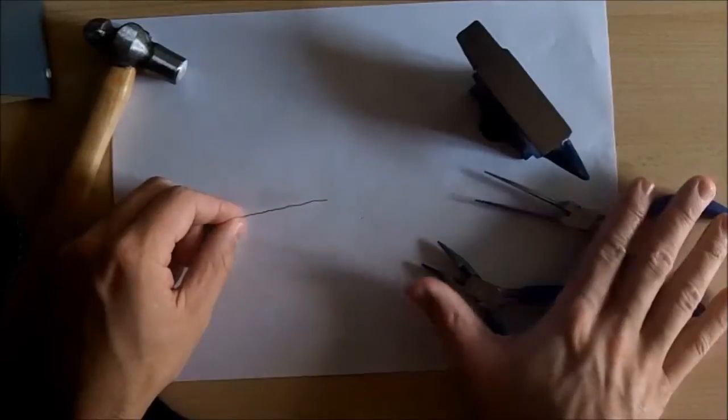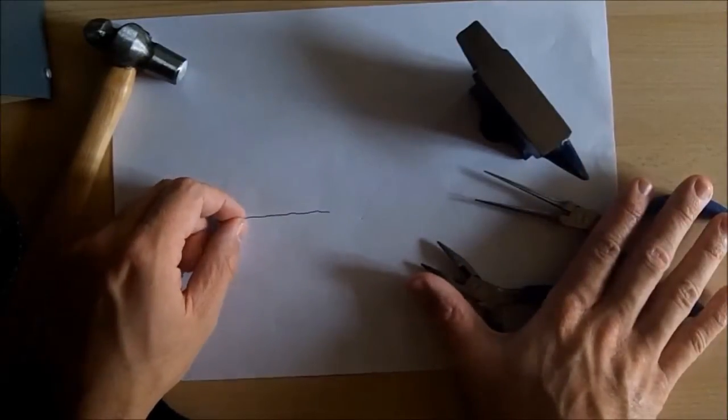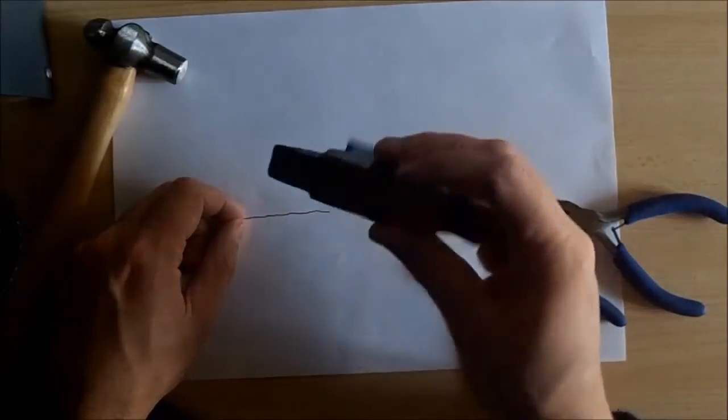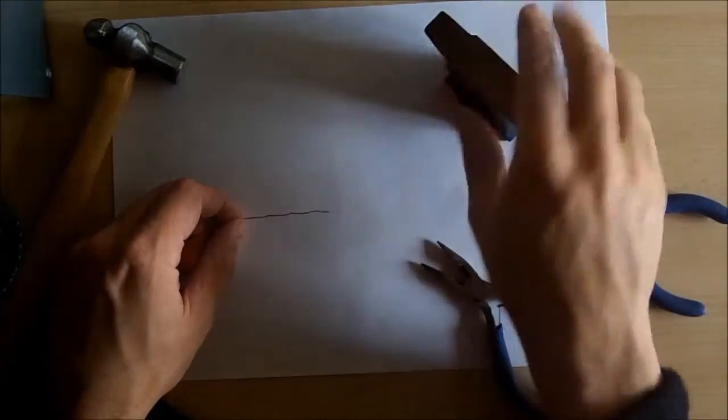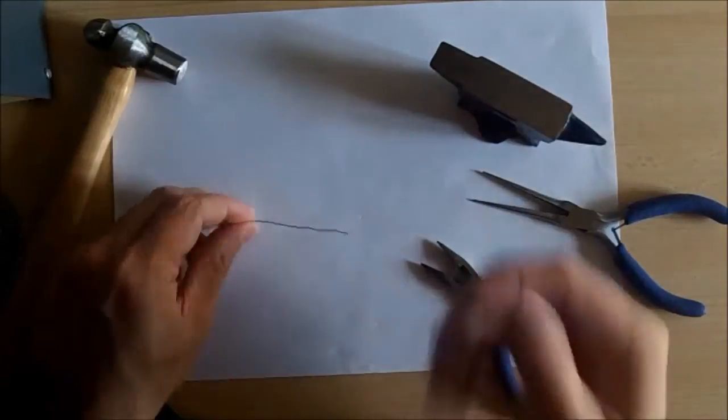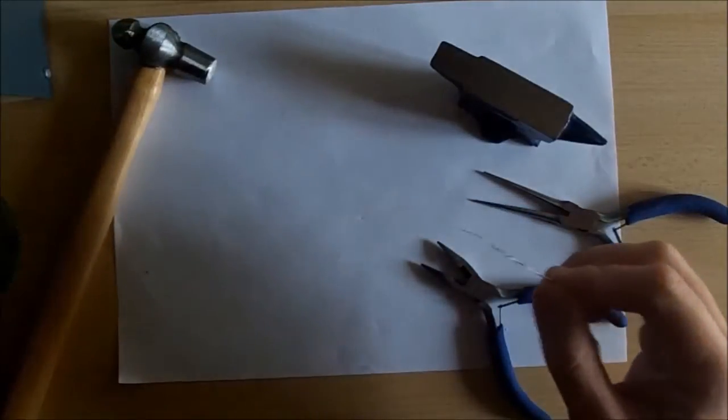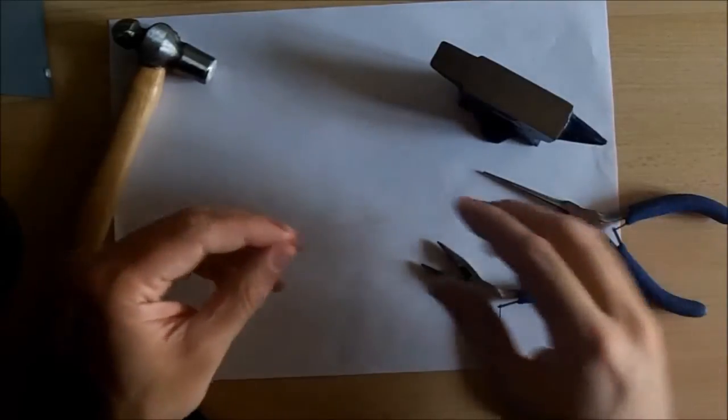What you're going to need: the same pliers we used for making the detail point, a strike surface. In this case I've got a little anvil-like object, but you can use a strike plate or a copper coin. You're going to need a hammer, and you're also going to need to have your pyrography machine at the ready.